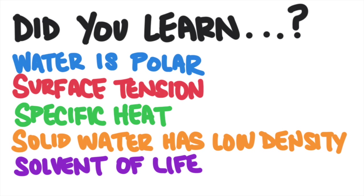So to recap: water is a polar molecule composed of hydrogen and oxygen, and water molecules are strongly attracted to one another because of their ability to hydrogen bond. Water molecules have a high surface tension, water has a high specific heat, and solid water is one of the few substances where the solid floats on top of the liquid. And finally, water is the solvent of life.